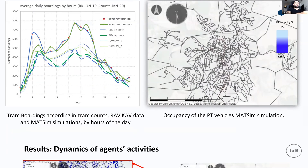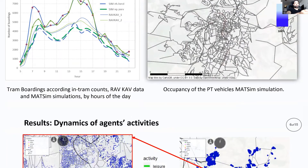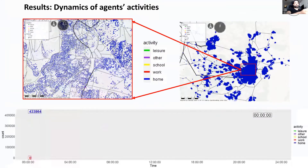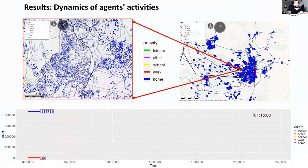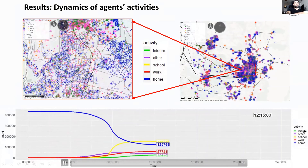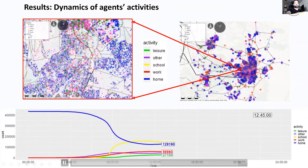Here we see Jerusalem again with activities of different agents: leisure, school, work, and home. The graph shows activity patterns across the day. When something ticks, someone is going to work, going home, or doing something else. The time series shows how many people are at work, home, and so on throughout the day — this is just a visualization of the Jerusalem model.